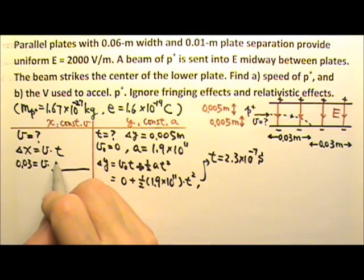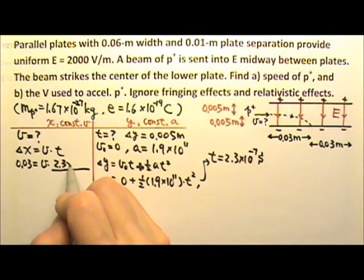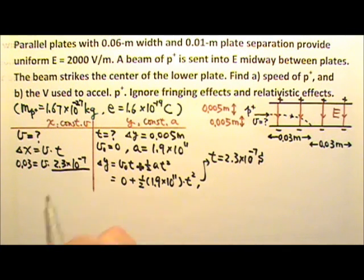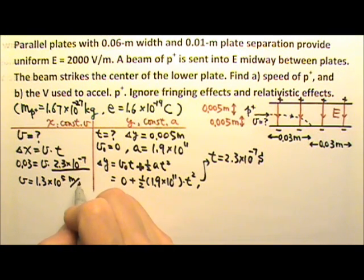So if we solve for t, we'll find that the time is 2.3 times 10 to the negative 7th second. And we can put that time right here, and then we can find the velocity we need for part A. So the v is 1.3 times 10 to the 5th meters per second. And that's the answer for part A.